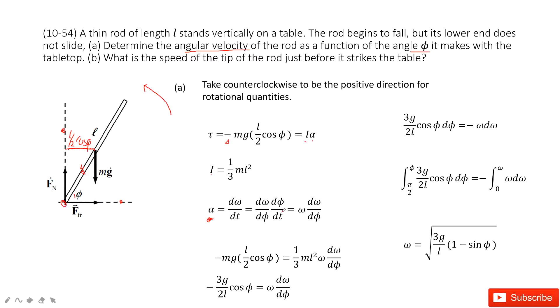Now, you can see d phi divided by dt is just omega. So alpha equals omega times d omega d phi. So in this one, we only have two variables: omega and phi.